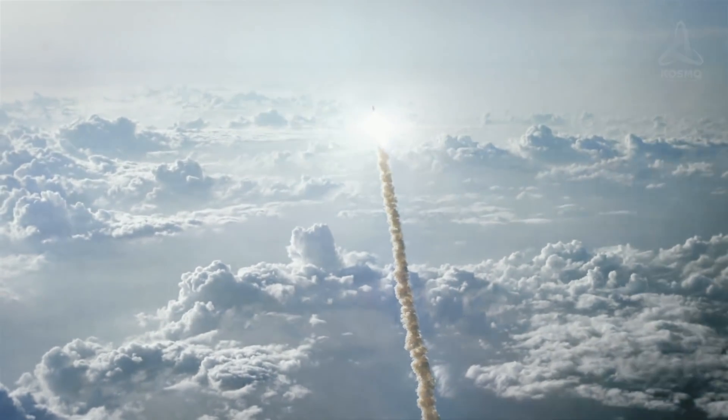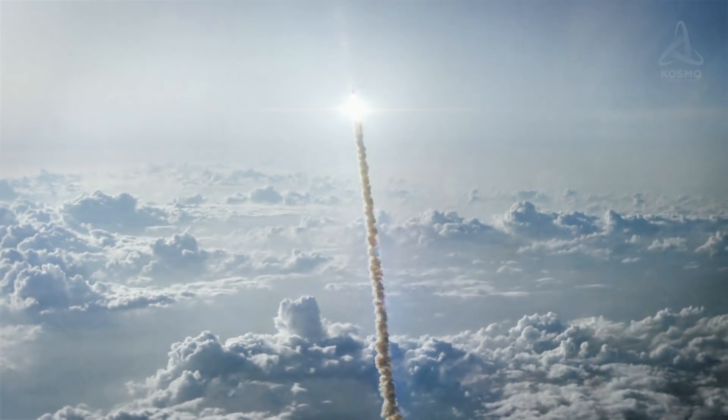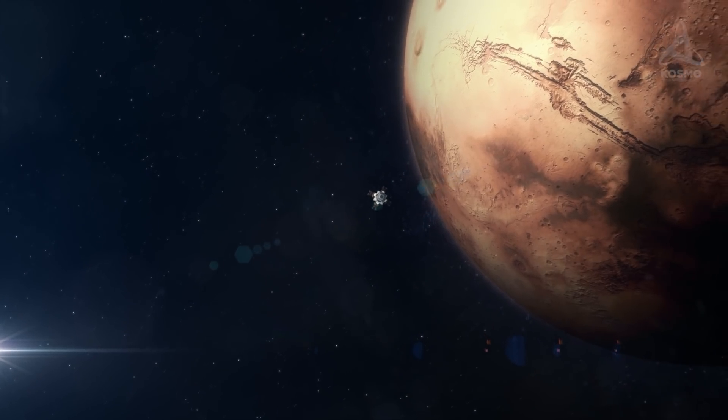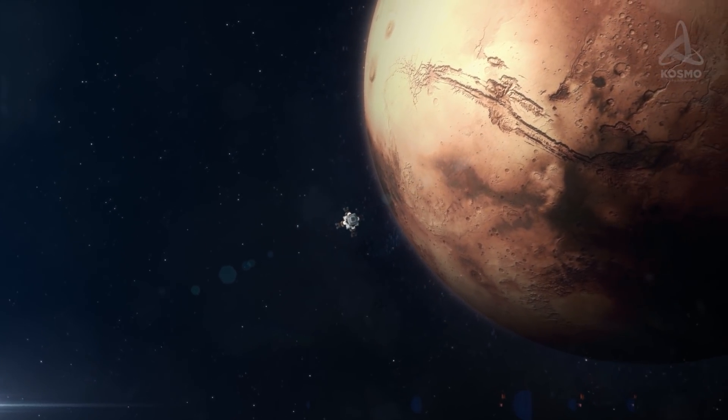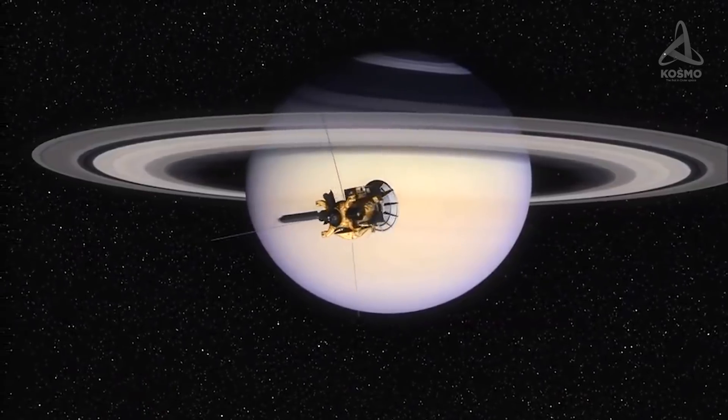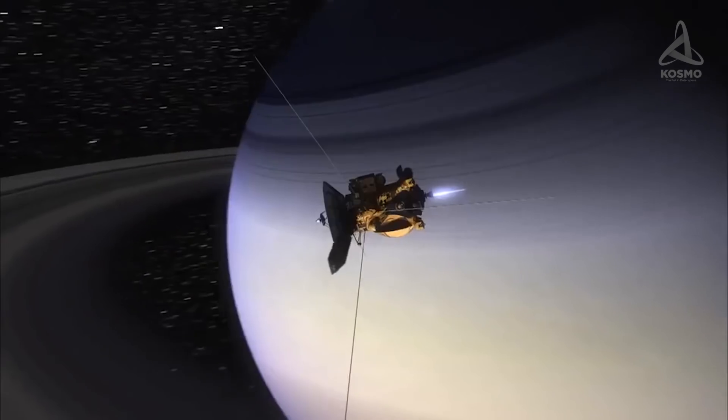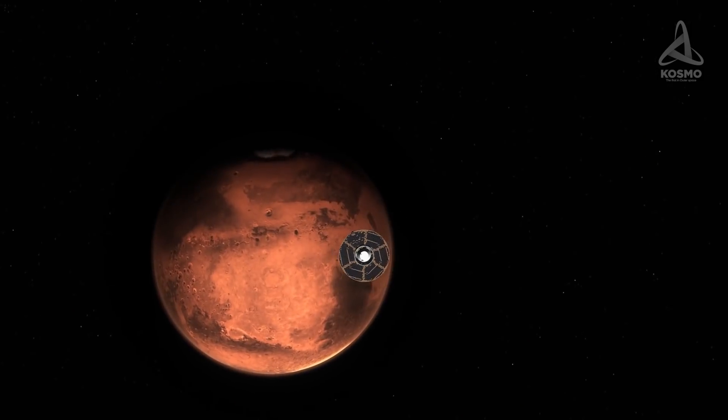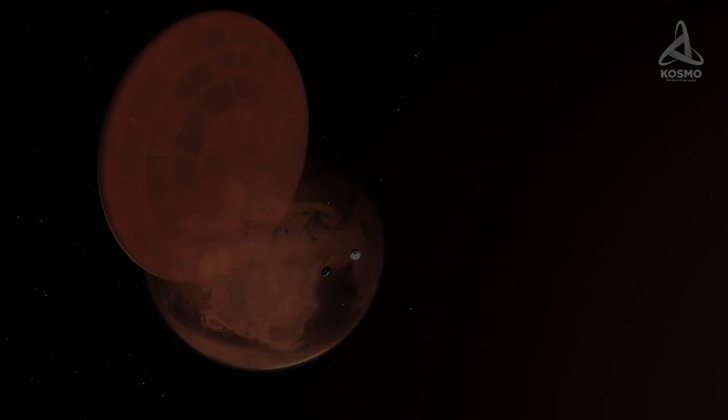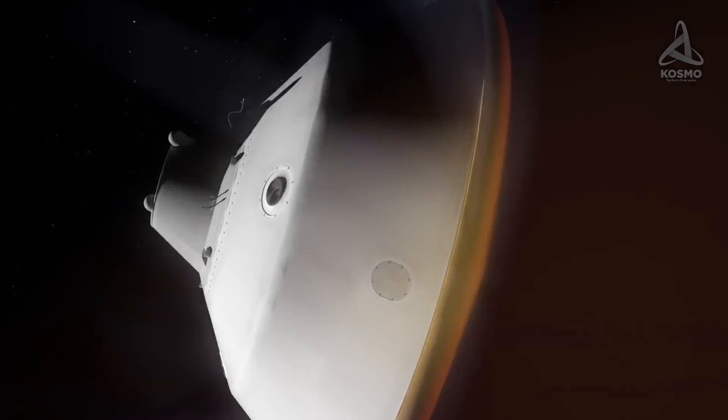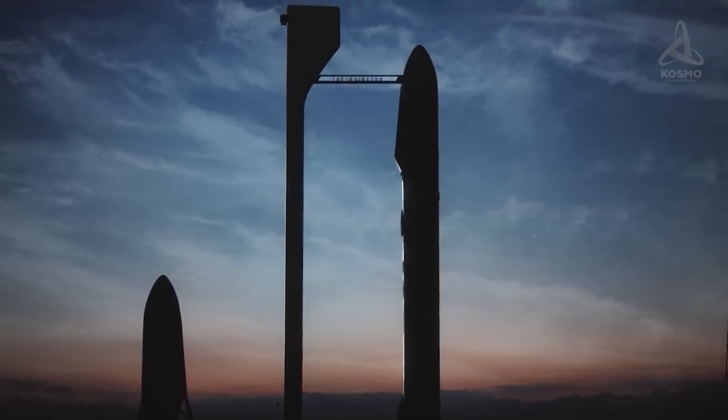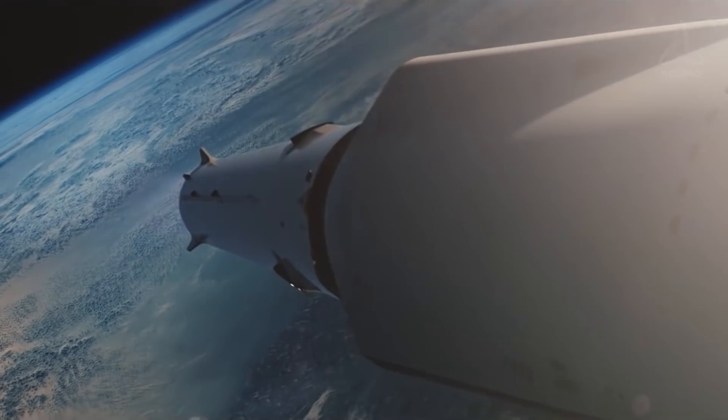Needless to say, it takes spacecraft considerably longer time. They have to follow complex trajectories around the system and perform gravity boost maneuvers when in close proximity to planets on their way. The Perseverance Mars rover traveled to the Red Planet for slightly less than seven months. The SpaceX Starship is expected to take considerably less to cover the same distance.